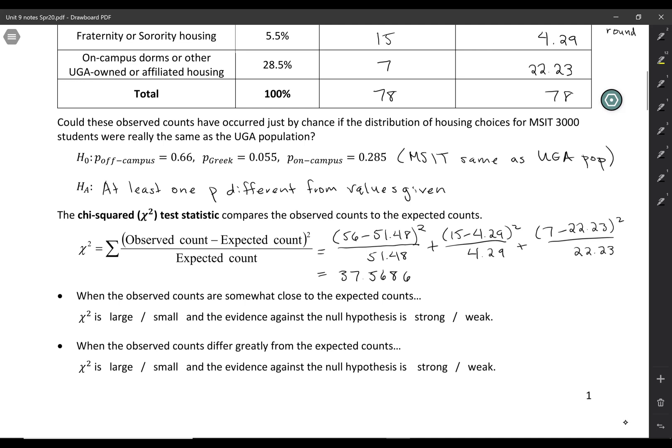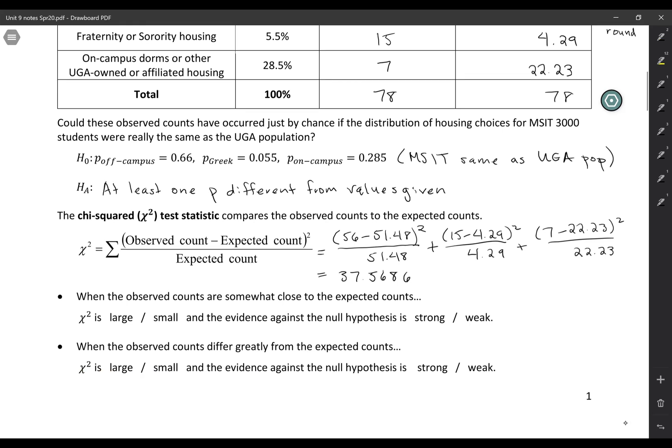Okay, so the questions below these bullet points are asking what does it mean to say the observed counts are somewhat close to the expected counts? What's that going to do to your chi-squared statistic? What's it going to do to the strength of evidence? And then also, what does it mean if the observed counts are very different from the expected counts? So one more time, pause the video, and then we'll look at the answers.